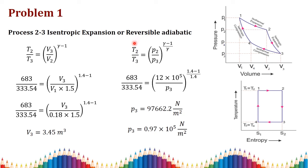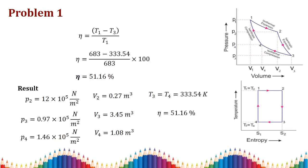Then equating temperature and pressure for process 2 to 3 and substituting all values in SI units (N/m²), we find p3. For the thermal efficiency of the Carnot cycle: η = (T_H − T_L) / T_H = (t1 − t3) / t1 = (683 − 333.54) / 683 × 100 = 51.16%.